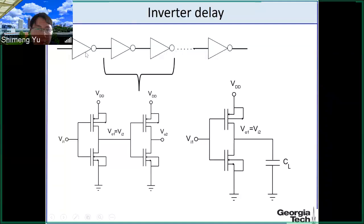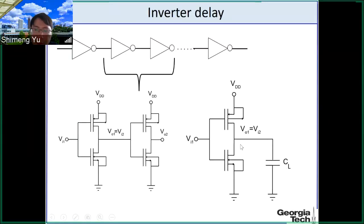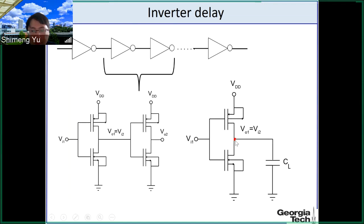Here we see one inverter driving another inverter. To make it simple, we are going to approximate the second inverter as a load capacitor to the first inverter. The output of the first inverter is attached to this capacitor, which represents all the capacitance at the output load. This is the circuit we are going to analyze: one inverter driving a capacitor. This is generally applicable to digital circuits, which are always some logic function driving a capacitor load.